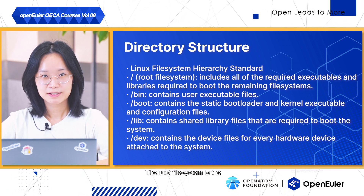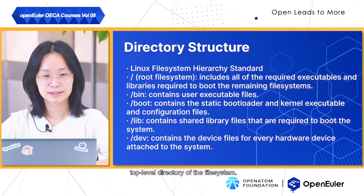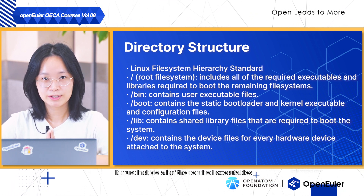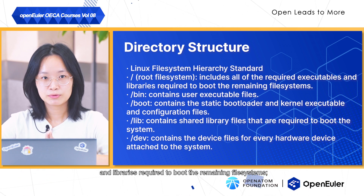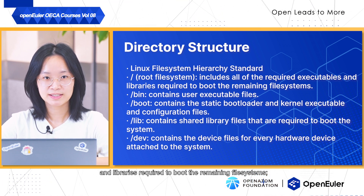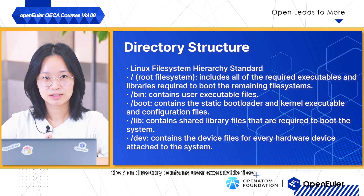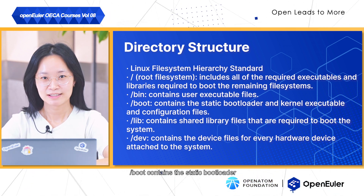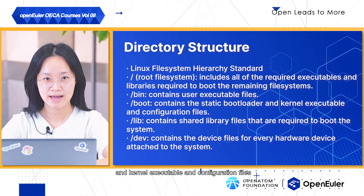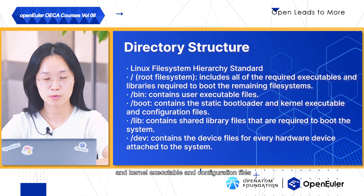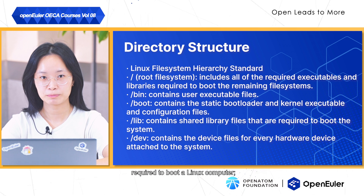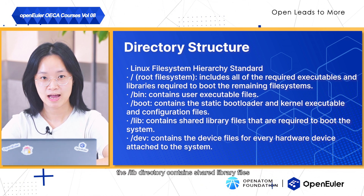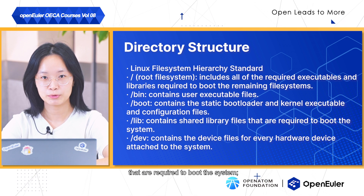In this discussion, I will briefly explore some of the prominent top-level Linux directories along with their designated functions. The root file system is the top-level directory and must include all required executables and libraries needed to boot the remaining file systems. The bin directory contains user executable files, and boot contains the static bootloader and kernel executables and configuration files required to boot a Linux computer. The lib directory contains shared library files required to boot the system, and dev contains device files for every hardware device attached to the system.